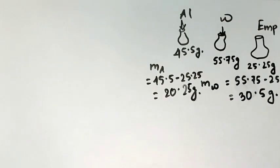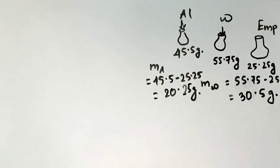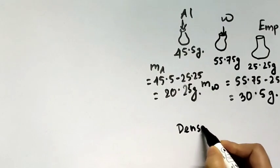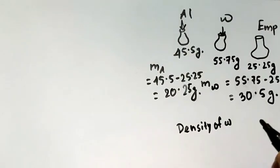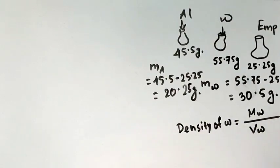The first part of the question asks for the volume of the bottle. When the bottle is empty and we pour water into it, the water takes the shape of the bottle. That means the volume occupied by the bottle and the volume occupied by the water are the same. So if we find the volume of water, we can easily find the volume of the bottle. Density of water equals mass of water divided by volume of water.